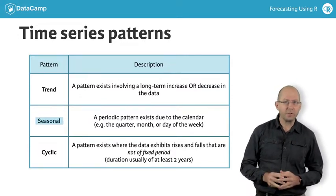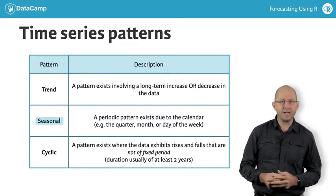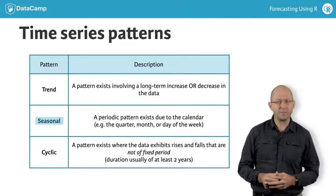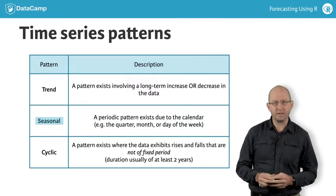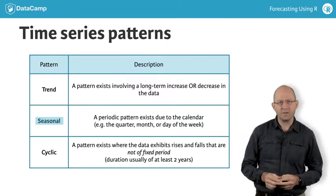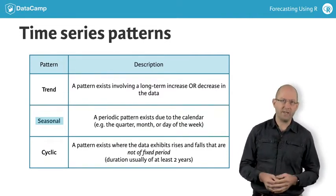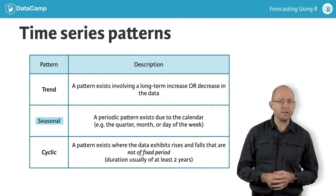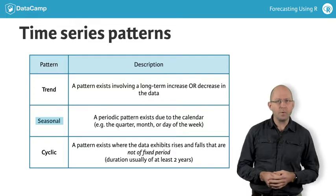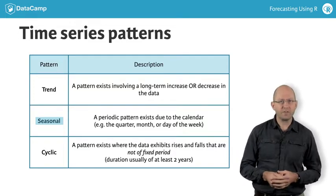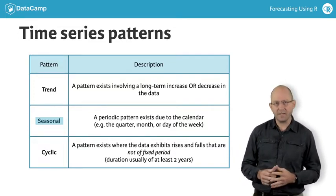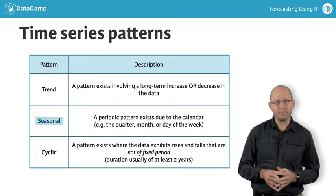Seasonality occurs when there is a regular pattern in the time series related to the calendar — for example, a yearly pattern, a weekly pattern, or a daily pattern. Whenever the behaviour of a time series is influenced in a periodic manner by the calendar, we call it seasonal.